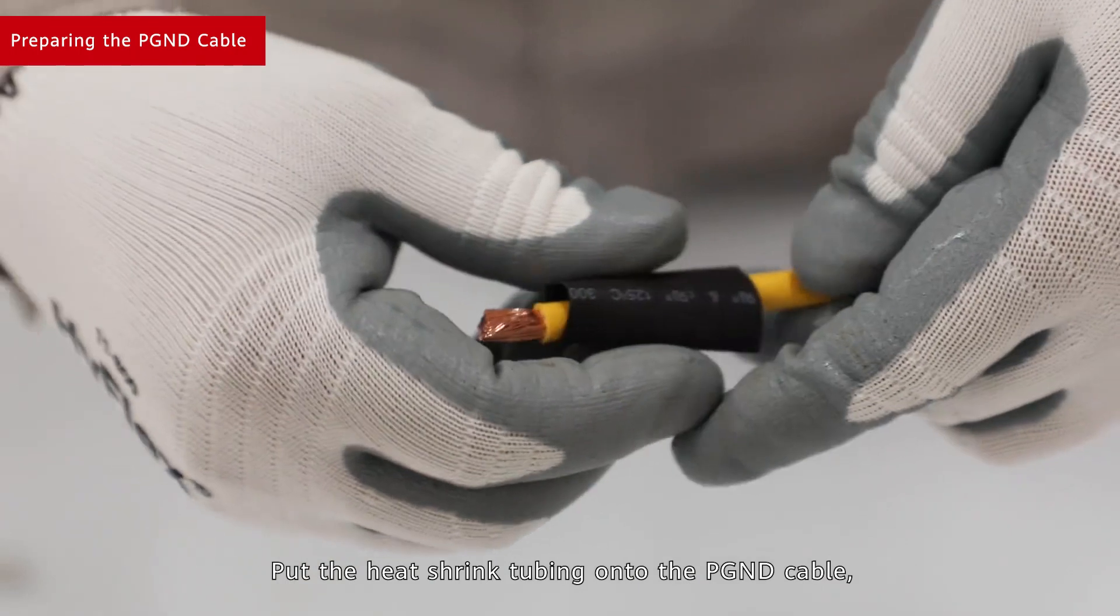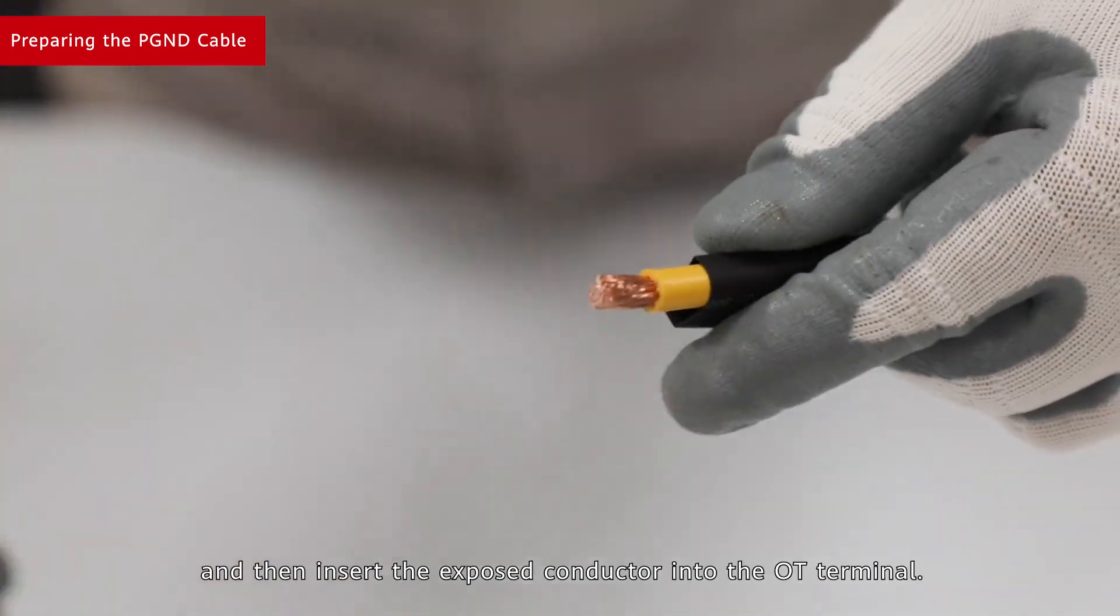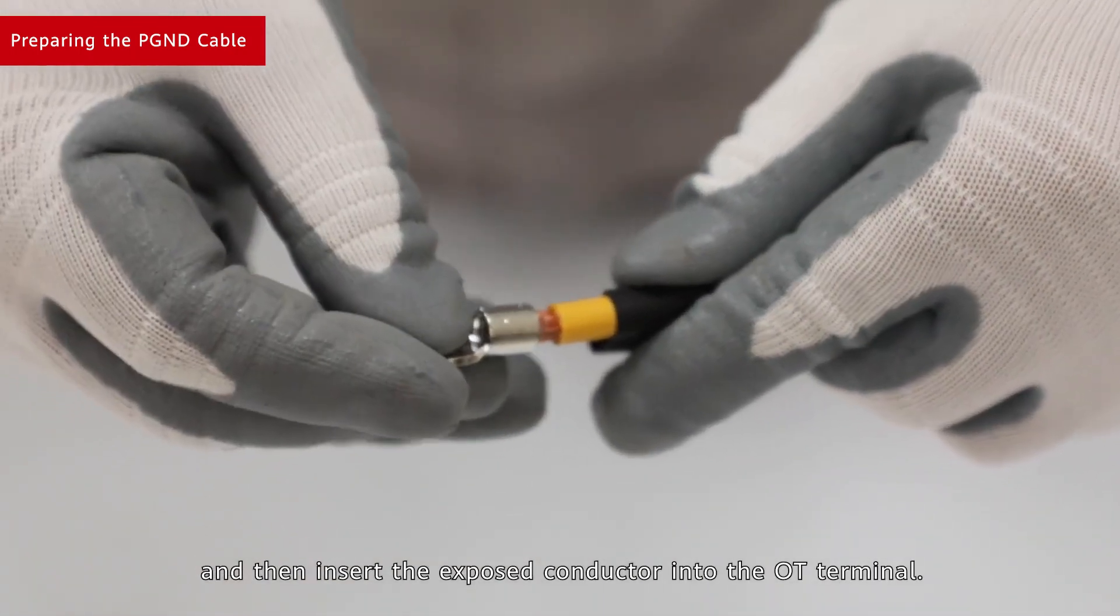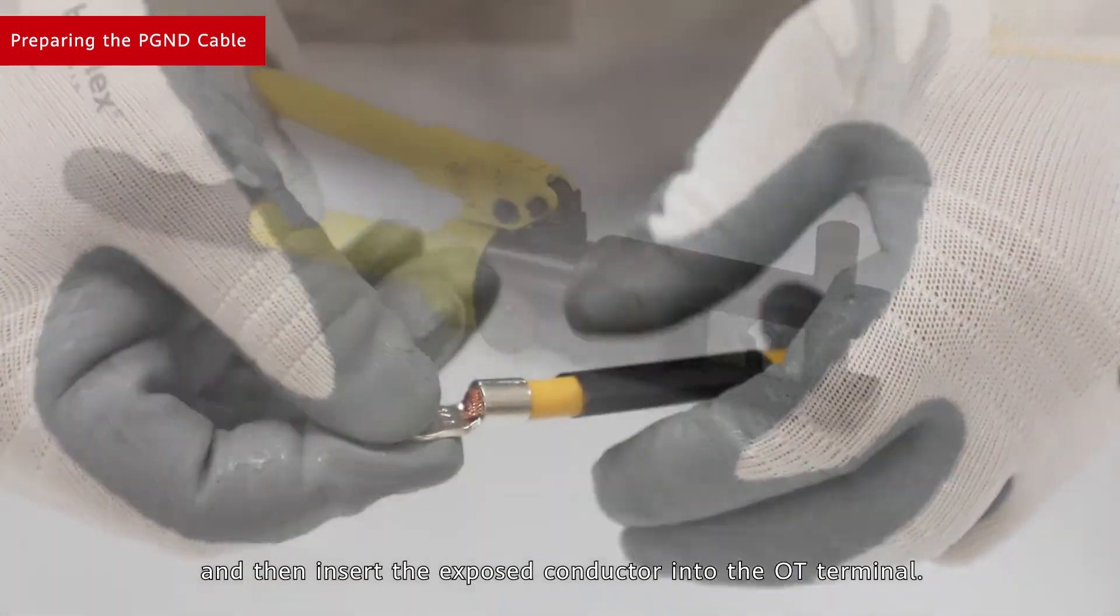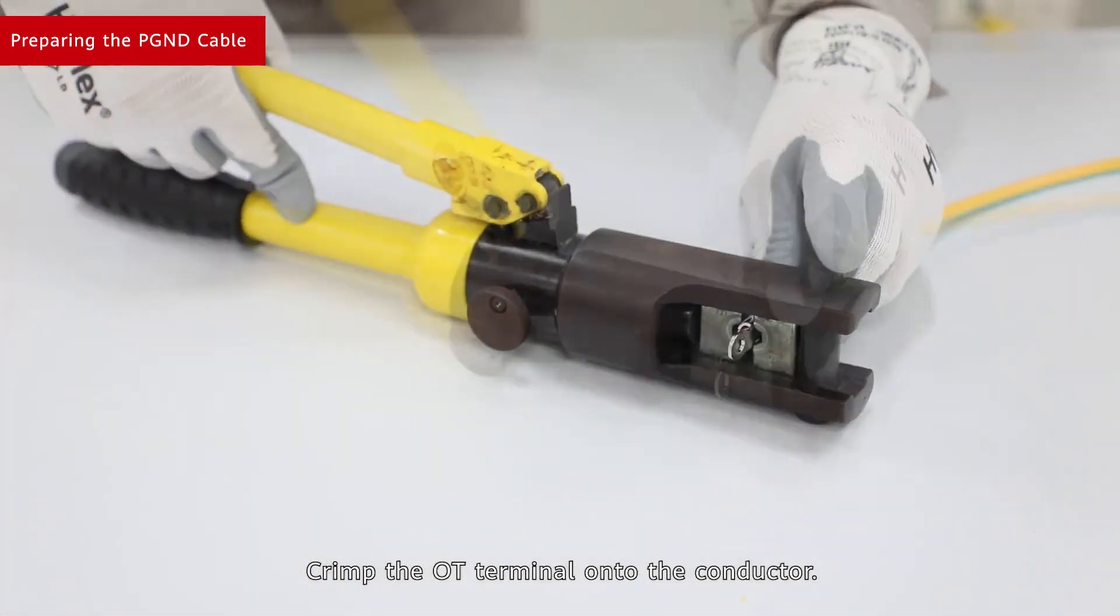Put the heat shrink tubing onto the PGND cable and then insert the exposed conductor into the OT terminal. Crimp the OT terminal onto the conductor.